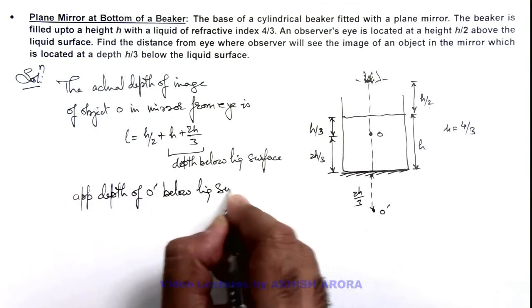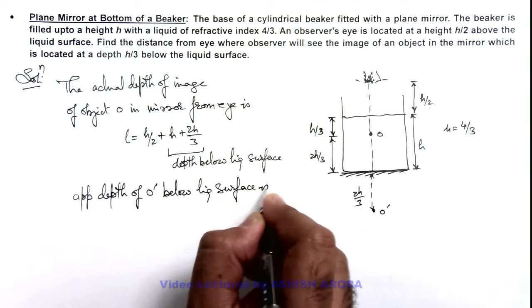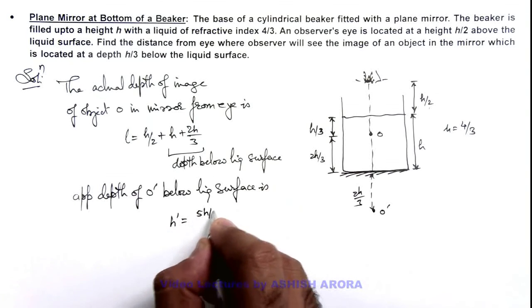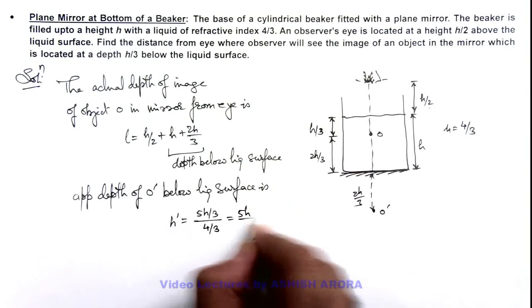This h' we can write as 5h/3 divided by μ which is 4/3, so this will be 5h/4.